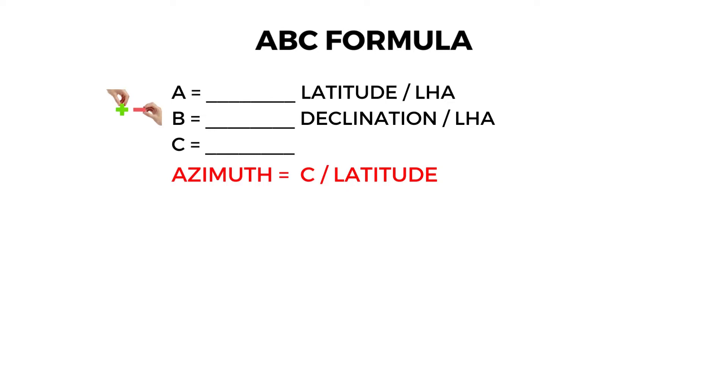With the C correction given, plus the latitude, we can also tabulate the true azimuth of the sun.